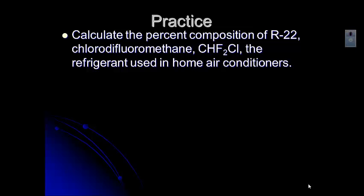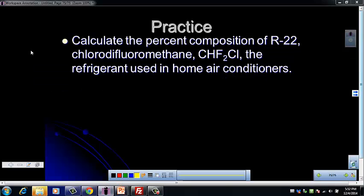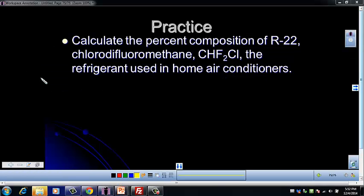Okay, so let's look at another example. This is asking us to calculate the percent composition of a compound called R-22. That's the trade name of chlorodifluoromethane, or CHF2Cl, the refrigerant used in home air conditioners. If you've ever heard of freon, this is a compound that is known as freon. So let's go ahead and set this up. Remember that for percent composition, we just want the percent of each element in the compound by mass.